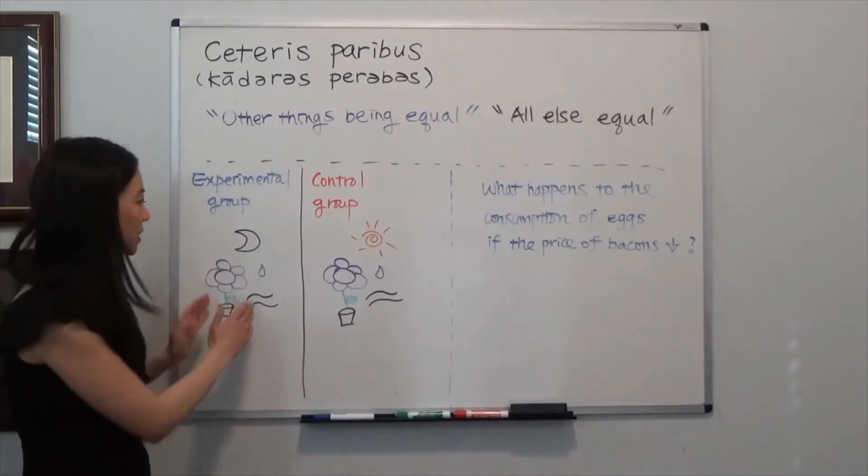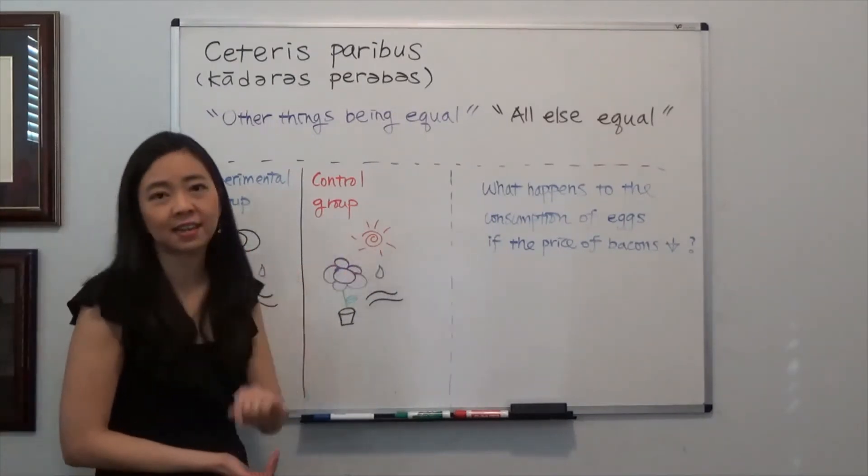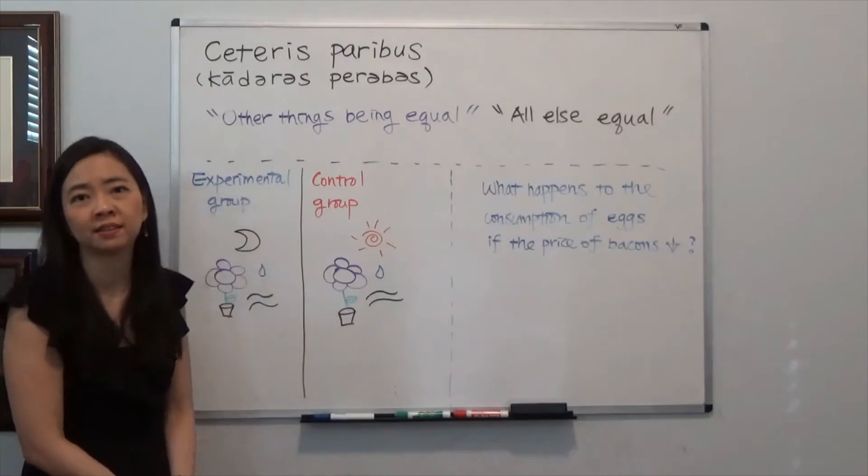For the experimental group, we take away the sunlight. And for the control group, we give the sunlight. So everything else must remain the same.